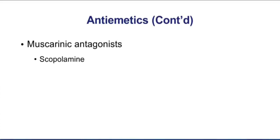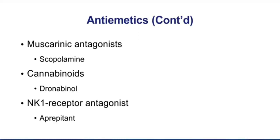Other anti-emetics include scopolamine, the muscarinic receptor blocker used for motion sickness. The marijuana derivative dronabinol is a cannabinoid agonist — it stimulates CB1 receptors to have its anti-emetic effect. The NK1 receptor blocker is aprepitant. Make sure you know the serotonin 5-HT3 blockers and the dopamine D2 blockers, but we've also covered a few other important anti-emetics.